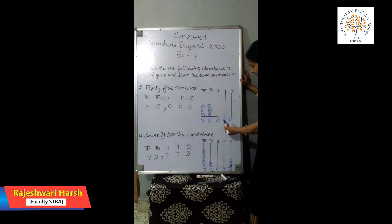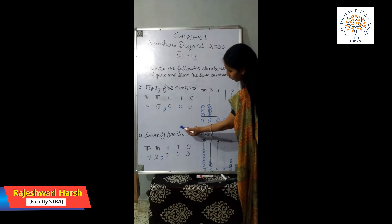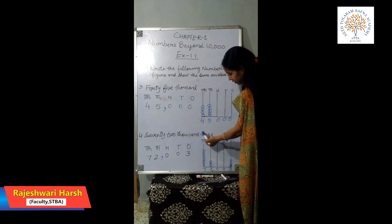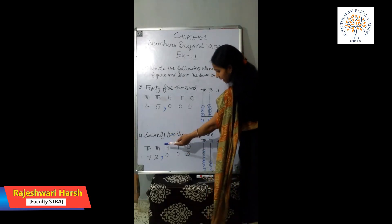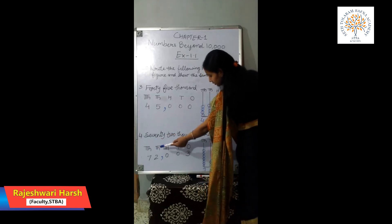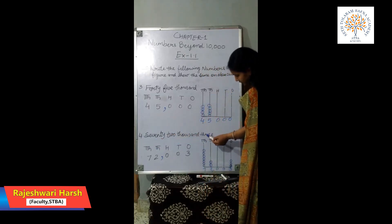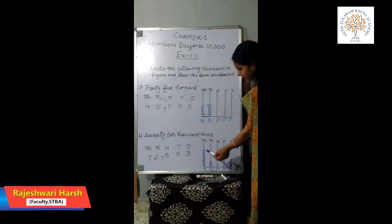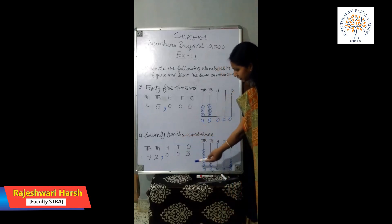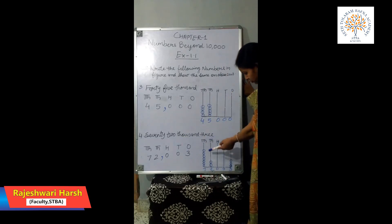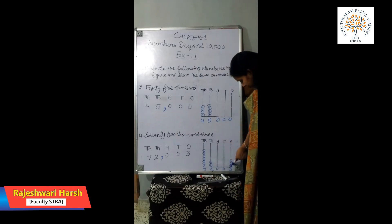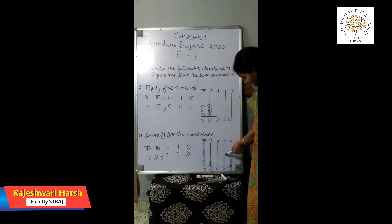Fourth part: 72,003. 72,000 means write 7 on the ten thousands place and 2 on the thousands place. The last digit is 3, so write 3 in the ones place. There are no digits in the tens or hundreds places, so write 0 there. On the abacus, draw 7 beads on the ten thousands place, 2 beads on the thousands place, and 3 beads on the ones place. No beads on tens or hundreds.